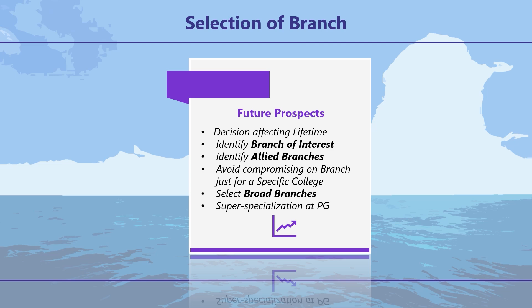While making the branch-college choice, give preference to branch but with a caveat. For example, if you are not getting computers in VJTI, it may be better to take information technology in VJTI rather than take computer in some other college. You may select any of the allied branches to remain with the college of your choice. However, if your primary interest is computers, do not choose mechanical just to remain in VJTI.